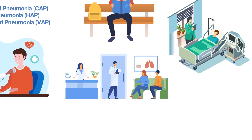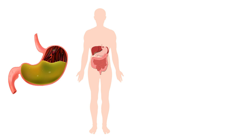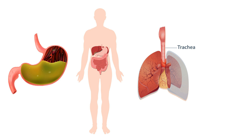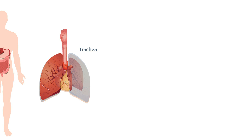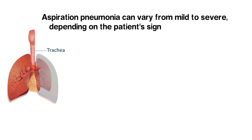Aspiration pneumonia is acquired when a patient aspirates bacteria into the lungs, usually from food, saliva, or stomach acid. These contents are meant to be swallowed through the esophagus into the stomach. However, when they are instead aspirated through the trachea into the airways of the lungs, this is when the problem begins and an infection can ensue. Aspiration pneumonia can vary from mild to severe depending on the patient.